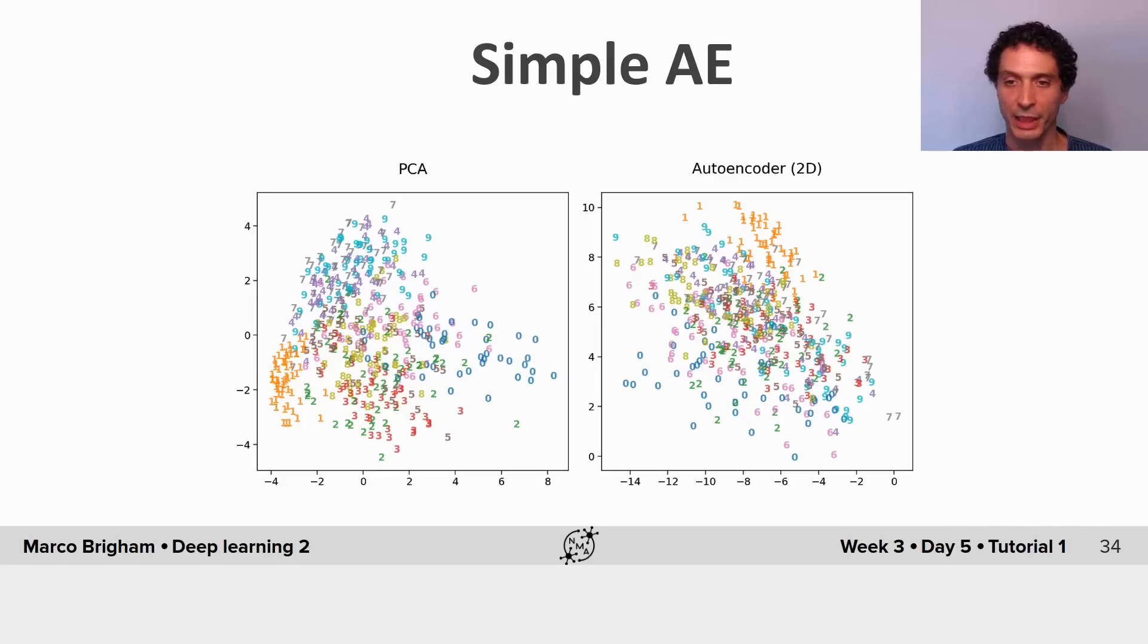Autoencoder and PCA, the shallow autoencoder, they mostly separate digits 1 from 0 but it's not very separable for the other digit classes.